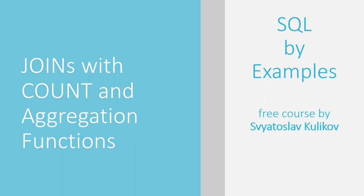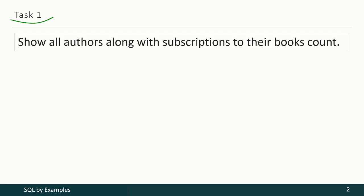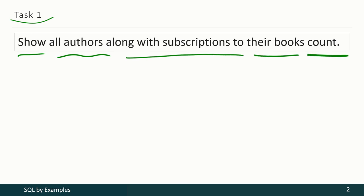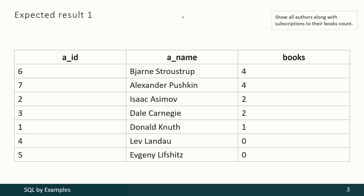In this video we shall discuss some more cases of joins with count and aggregation functions usage. In the first task we have to show all authors along with subscriptions to their books count — that is, show the list of authors and information about how many books of each author were taken by subscribers.